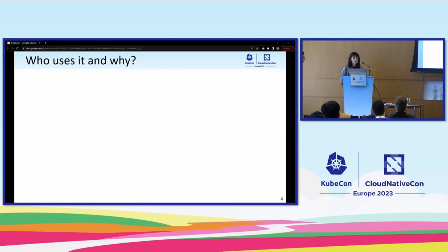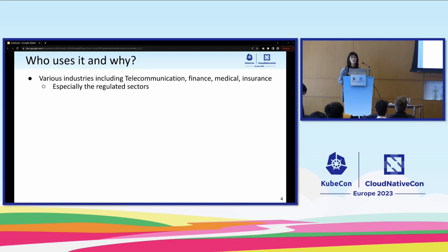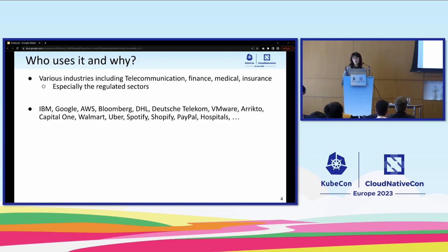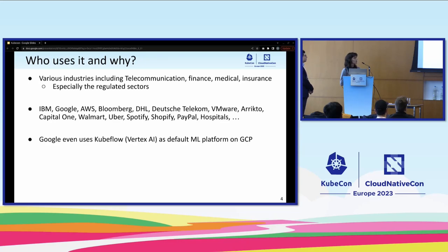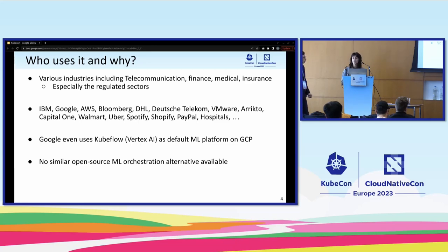So, who is using Kubeflow and why? Companies from various industries are using Kubeflow, like communication, finance, medical, insurance, and especially the regulated sector. Some hyperscalers are also using it, like IBM, Google, VMware, DHL, Ricto, and others. Google is using Kubeflow as their default machine learning platform on GCP under the name Vertex.ai. But why is Kubeflow the platform of choice for so many users? Simply put, there is no similar open-source machine learning orchestration alternative available.